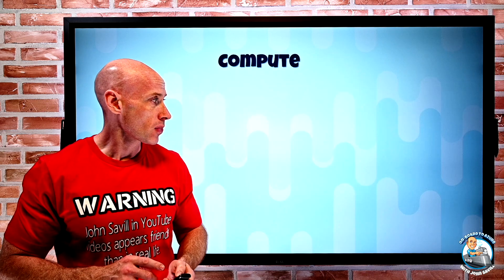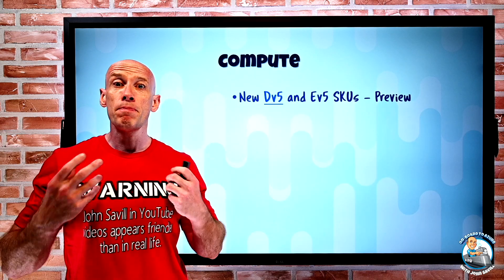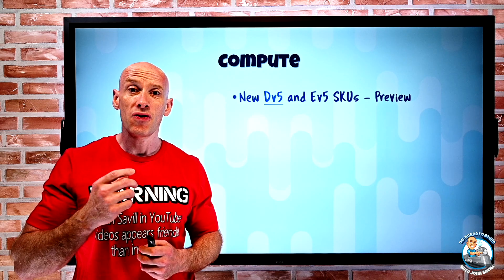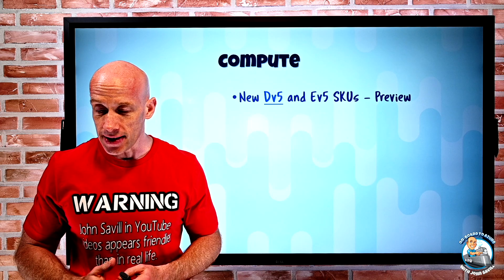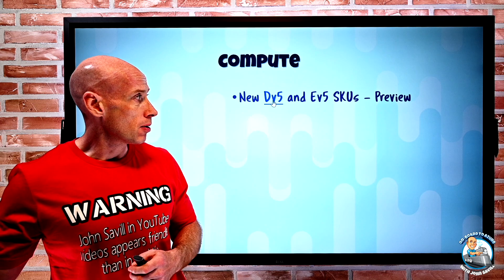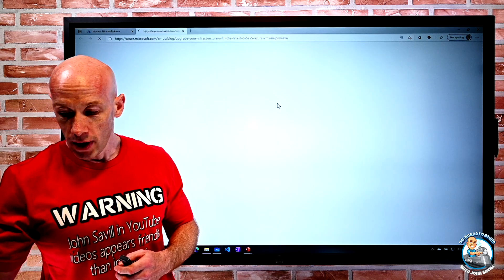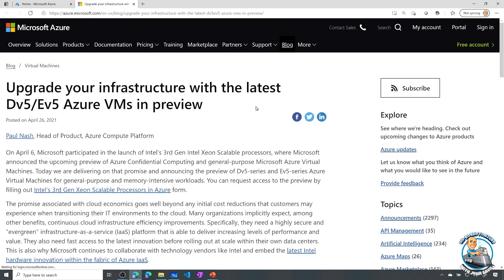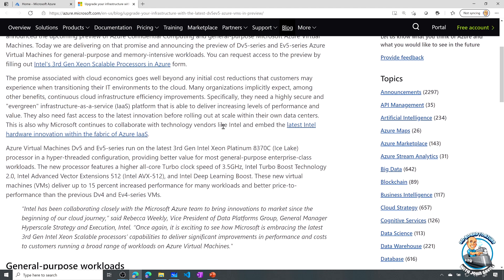The PowerShell secrets management module abstracts the technology used to store secrets — be it Credential Manager, file, Key Vault, or HashiCorp — giving a common set of commands. Now for new features: on the compute side, a fairly big announcement around the new v5 for the D and E series. These are in preview. We're looking at about a 15% performance increase over the current v4 offerings.